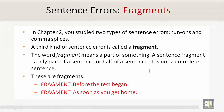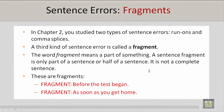Sentence errors: Fragments. In Chapter 2, you studied two types of sentence errors — run-ons and comma splices. A third kind of sentence error is called a fragment. The word fragment means a part of something. A sentence fragment is only part of a sentence, or half of a sentence — it is not a complete sentence.